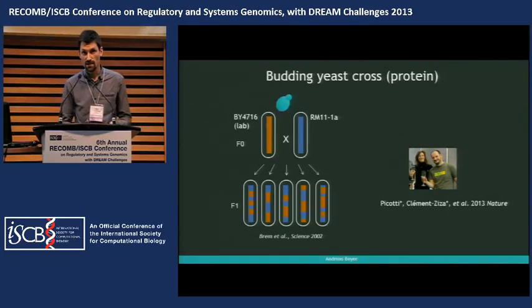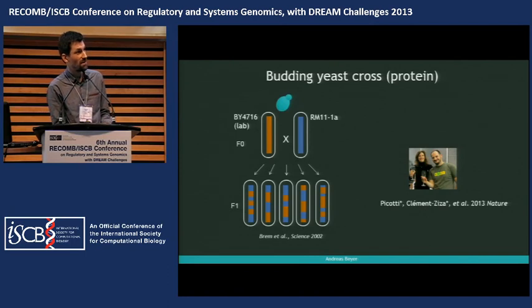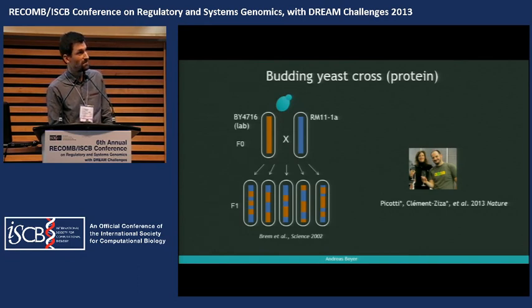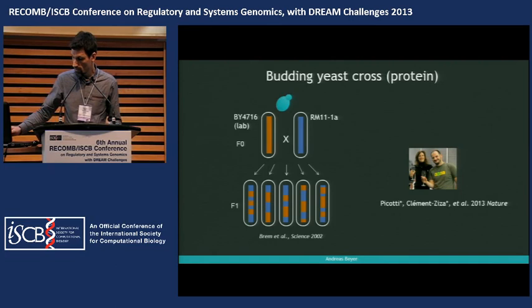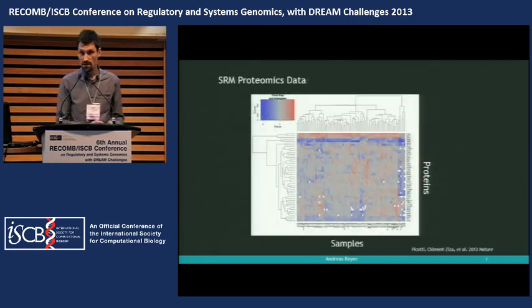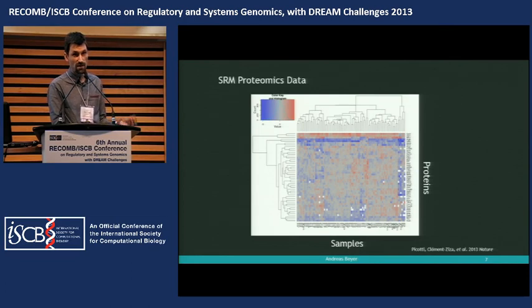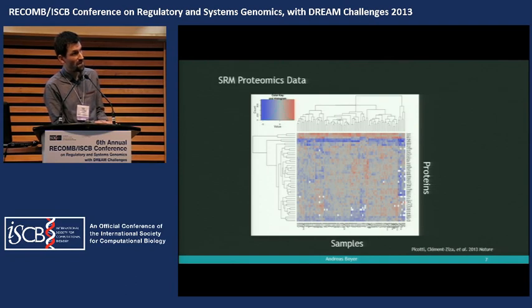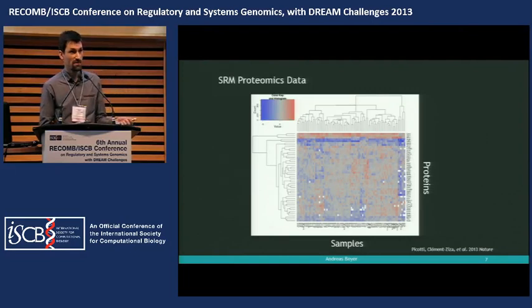The first application is to protein data. This was a collaboration between my postdoc Mathieu Clément-Zizahi and Paula Picotti from the group of Rudy Ebersold at ETH. He used the technologies developed by Rudy for measuring protein levels in a cross of budding yeast strains. The cross was generated by Rachel Graham when she was working with Leonid Kruglyak. The data is based on targeted proteomics — we can very reproducibly and precisely measure proteins in many samples, which is crucial for QTL studies. We have very few missing data, which is an important innovation over traditional shotgun proteomics.